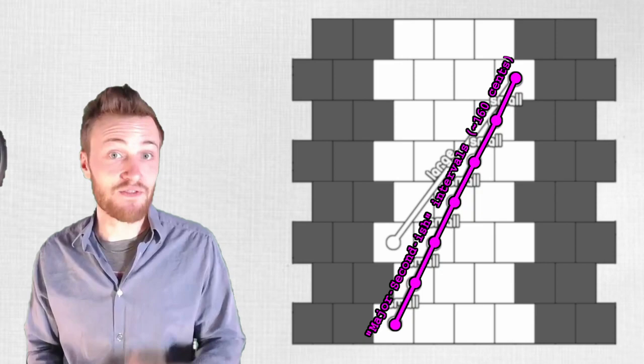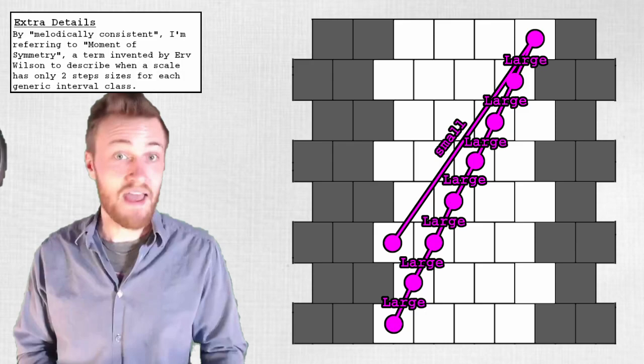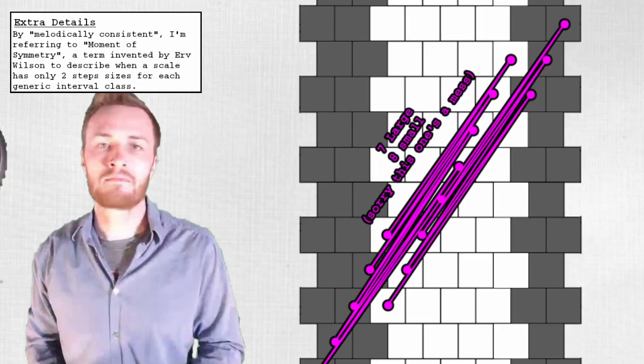If you continue that chain of seconds beyond that seven note scale, we get another melodically consistent scale right at eight notes, with a structure of seven large steps and one small step. And then at fifteen notes, with a structure of seven large steps and eight small steps.